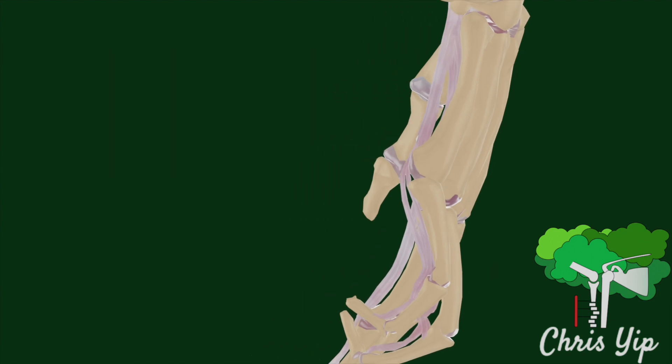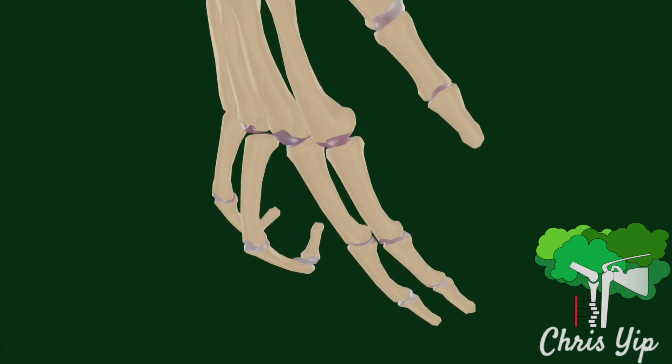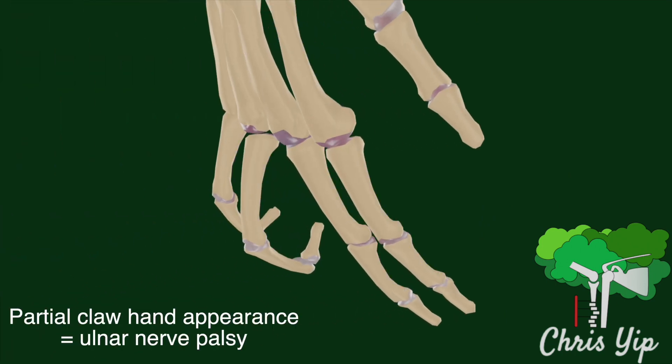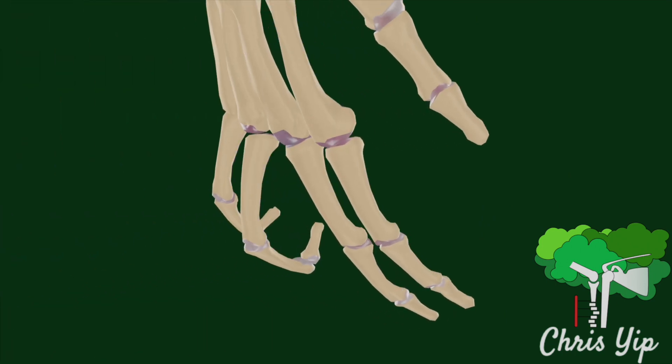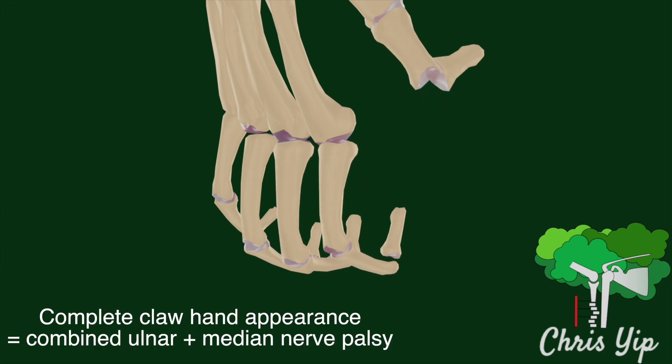This results in the partial claw hand appearance of the fourth and fifth digits. In order to have a complete claw hand appearance of all the digits, both the median and ulnar nerves need to be affected.